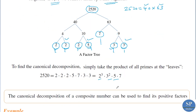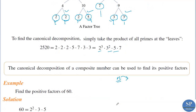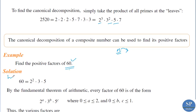The canonical decomposition of a composite number can be used to find the positive factors of that number. For example, find the positive factors of 60. We know 60 = 2² × 3 × 5, which is the canonical representation of 60. By the fundamental theorem of arithmetic, any factor of 60 is of the form 2^a × 3^b × 5^c.